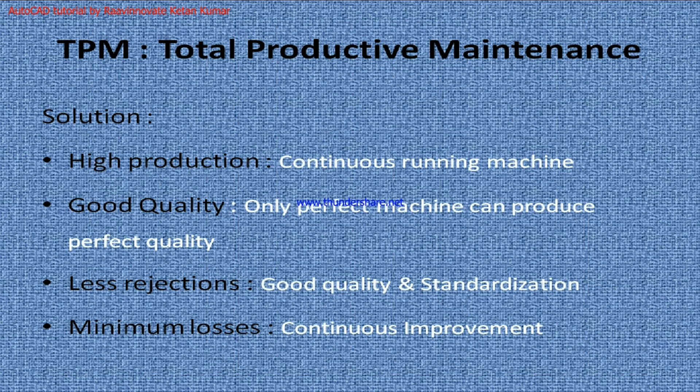The solution for the problem we discussed is Total Productive Maintenance. For high production, if my machine is running continuously for 24 hours, it will be producing the maximum number of parts it can produce. For good quality, we know that only a perfect machine can produce perfect quality. So to maintain good quality, our machine should be perfect. High production can be increased by continuous running of the machine, and good quality can be maintained only by a perfect machine.